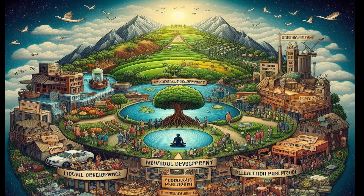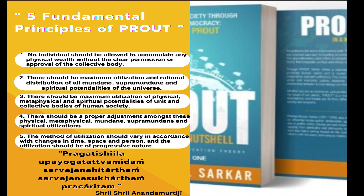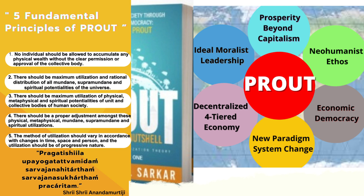PROUT stands at the intersection of individual and collective interests, offering a holistic socioeconomic system. Unlike capitalism, which prioritizes profit, and communism, which emphasizes collective ownership, PROUT seeks balance. Key principles include sustainable development, ensuring prosperity for both people and the planet; equitable distribution, addressing disparities while respecting individual rights; and local self-reliance, empowering communities to meet their needs. PROUT envisions a world where economic systems serve humanity without compromising individual freedom or ecological well-being. Those who support this principle may be termed Proutists.